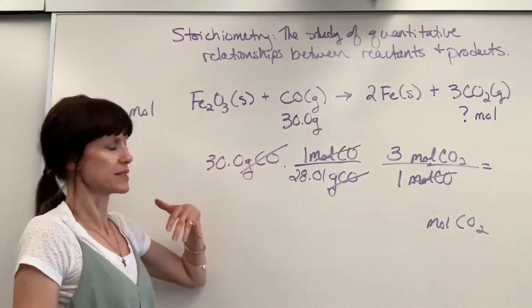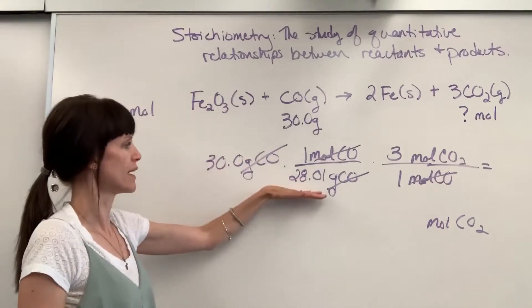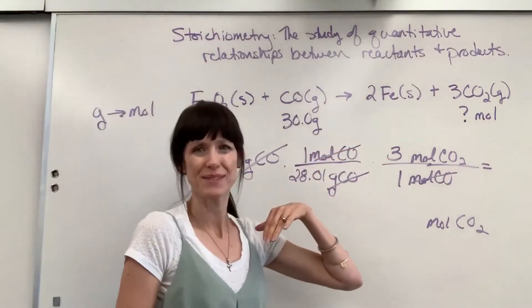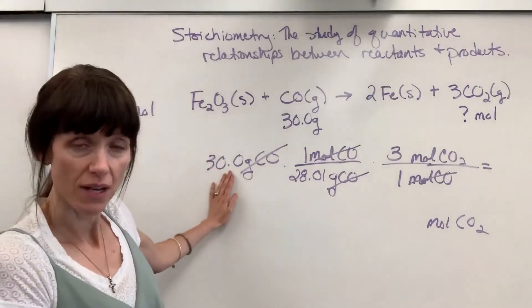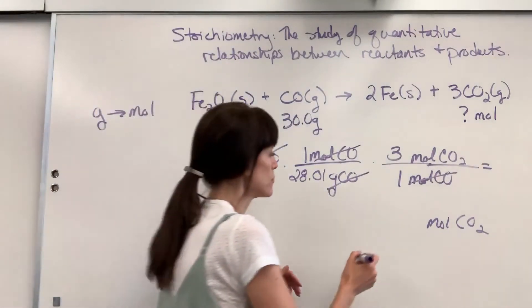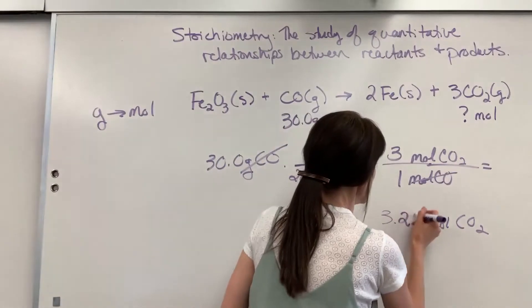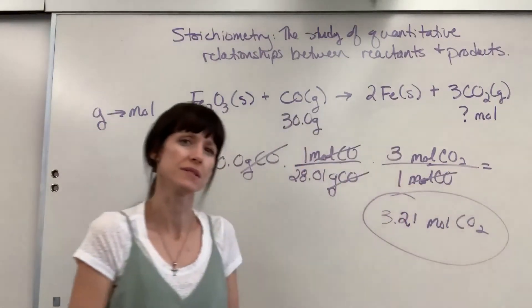Look at how you put this in your calculator. 30 divided by 28.01 times 3 and that answer is, now we have three sig figs right here, is 3.21 moles of CO2.